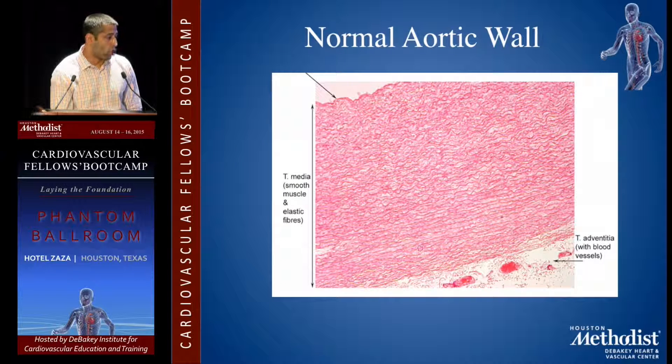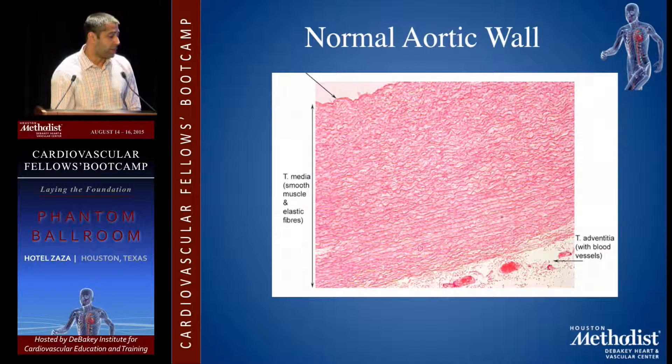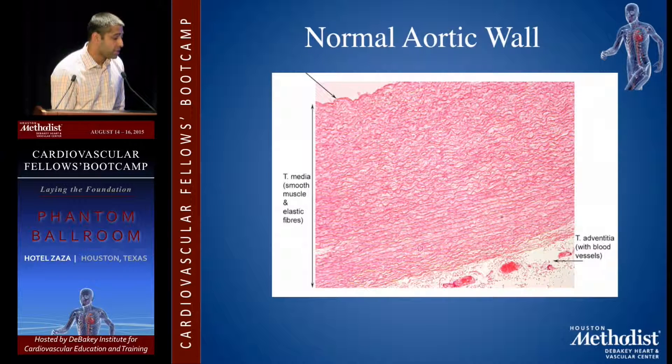This slide shows what a normal aortic wall looks like with the media visible. In the bottom part of the picture, you can see the adventitia with the blood vessels.